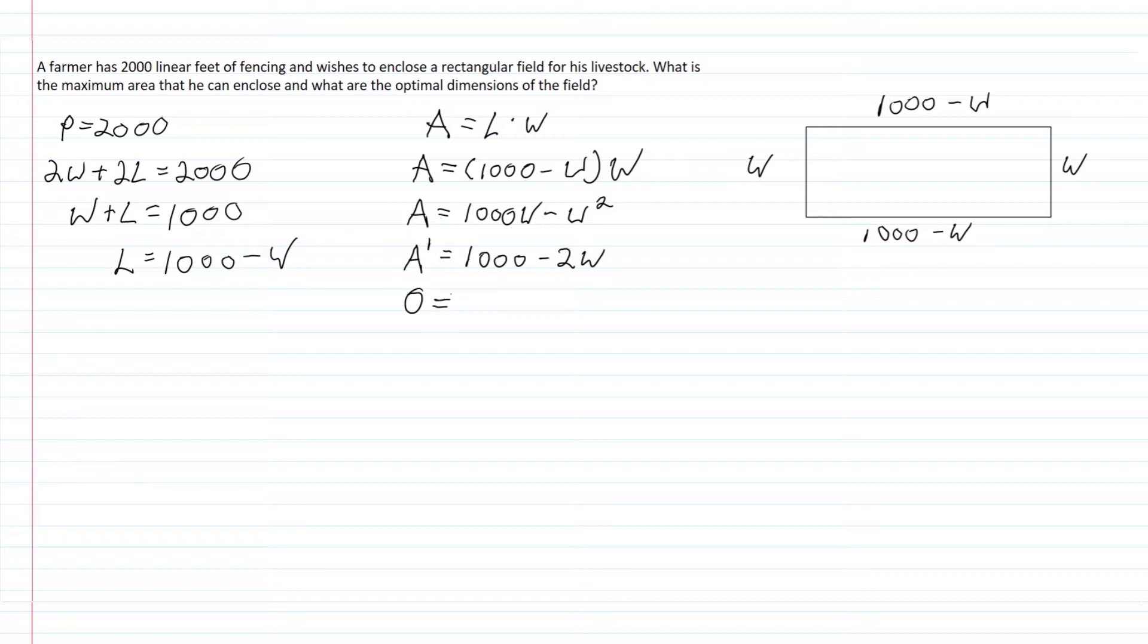If you think of this original area function, it's a parabola opening downwards. We want to find the point at the very top because that Y value is our maximum area. By setting the derivative equal to 0, we find where the tangent is horizontal, right at the top of the hill where we've maximized our dimensions.